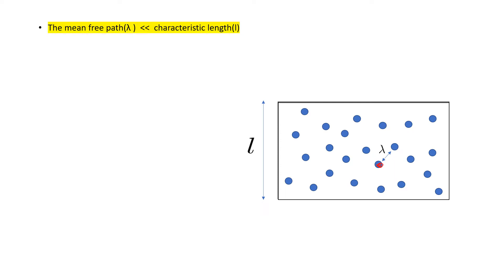You can see here one molecule here and another here. So the distance traveled by the molecule between two successive collisions is called mean free path. That is lambda and the characteristic dimension here is L. It can be either length or breadth which will be of comparable value.